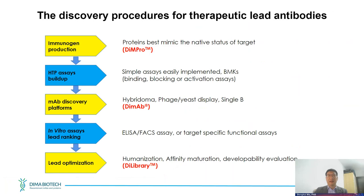The second part showcases how we utilize DMA's discovery platform to develop a CAR-T cell therapy solution for multiple myeloma treatment. The third and most important part shows how DMA can enable biopharma companies to discover lead antibody molecules and push their pipelines more quickly to clinical trials. Our discovery procedure begins with making the best native functional proteins as immunogens to immunize animals.